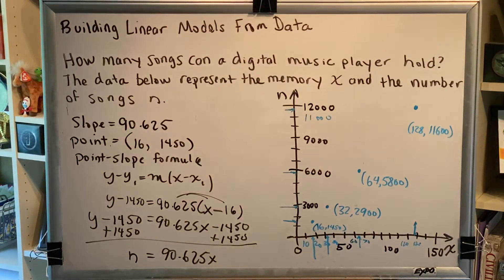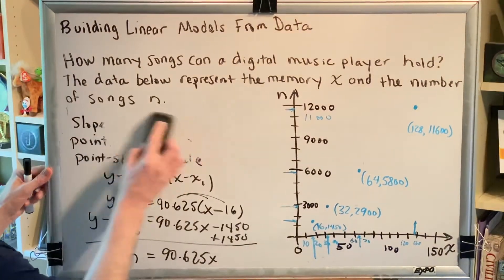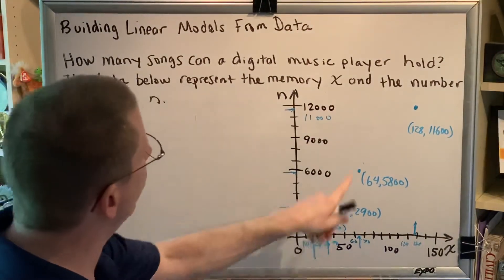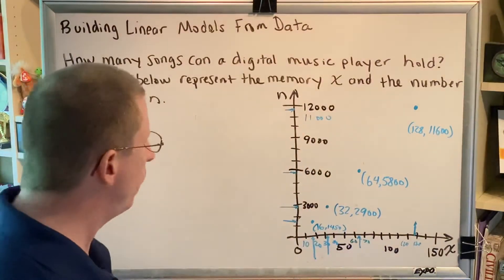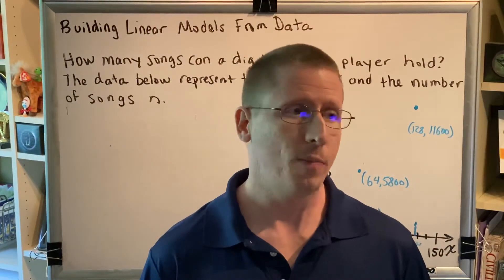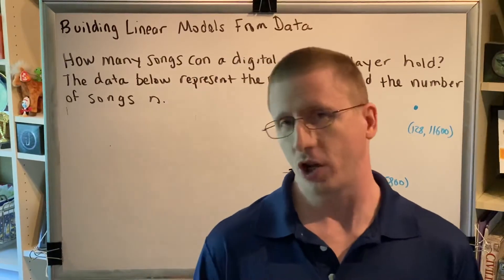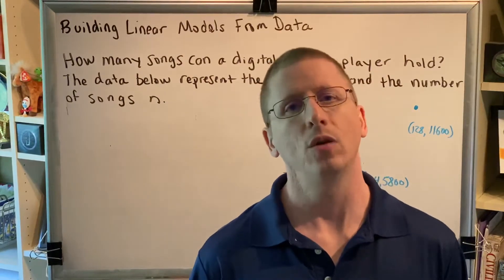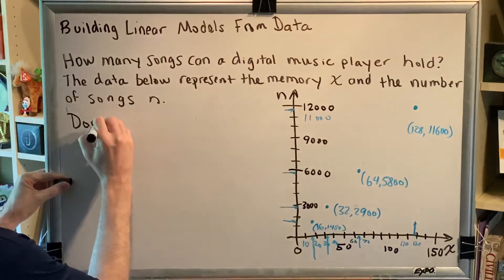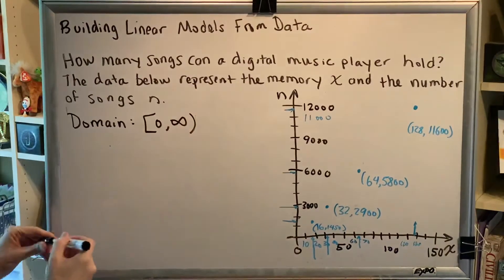So that was part c. Part d, what is the implied domain of the linear function? Well, when it comes to domain, we know we're talking about x, and we know that in the world there's the possibility for a number of gigabytes other than just 16 or 32 or 64 or 128. In fact, you could have literally any real number of gigabytes, as long as that number is zero or larger. It's possible to have no memory. If you take your mp3 player or your digital music player and you remove the memory chip, then there's going to be no memory in it. So zero is the smallest possible value, and then that just goes right on up towards infinity. So the domain is going to be from zero to infinity. Bracket zero comma infinity.